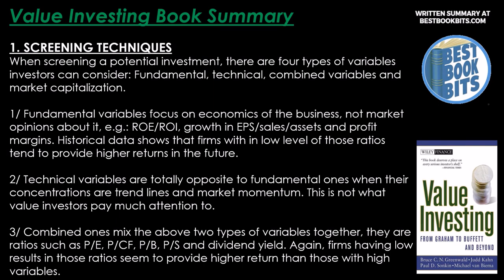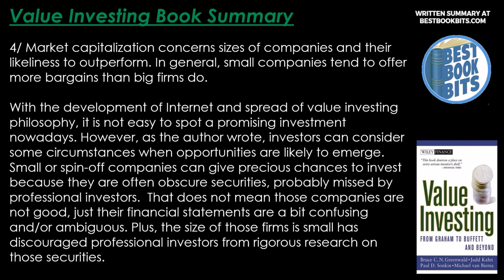Number two: technical variables are the opposite of fundamental ones — their focus is on trend lines and market momentum, which is not what value investors pay much attention to. Number three: combined variables mix the above two types together. They are ratios such as P/E, P/CF, P/B, P/S, and dividend yield. Again, firms with low results in those ratios seem to provide higher returns. Number four: market capitalization concerns the size of companies and their likelihood to outperform. In general, small companies tend to offer more bargains than big firms.